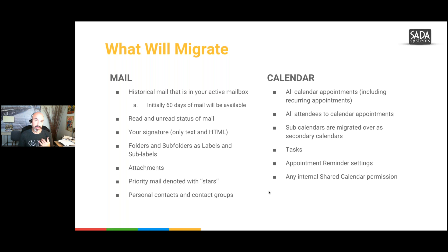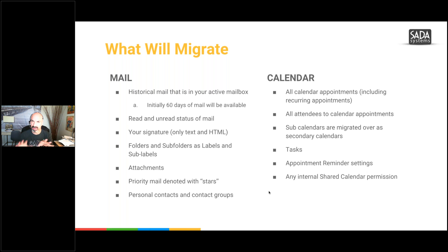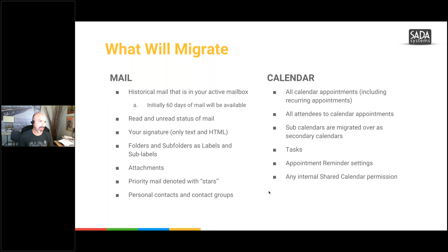Initially 60 days of mail will be available immediately, but it could be all of it. Everything's going to flow in there — we just like to put it as a caveat disclaimer. Red and unread statuses of mail. Your signatures should migrate; if they don't, you'll need to add your signature, but they should migrate over.